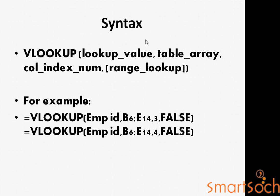For example, you look up EMPID B6 to B14 — it selects all the table array — then column index number 3, and range lookup false. If true, it will refer to the next chapter. The second example is EMPID B6 to B4 — it is also the same for mobile number or last name. Column index 3 is last name and 4 is mobile number.